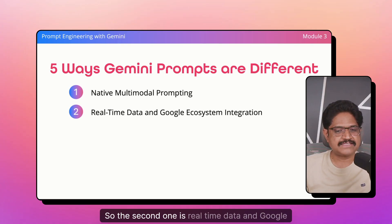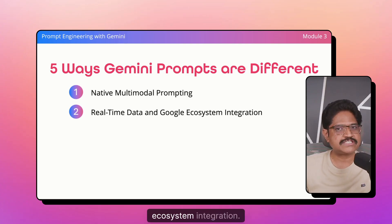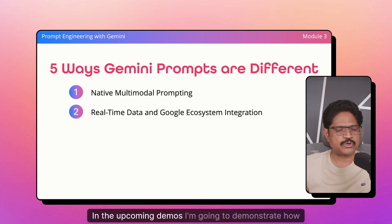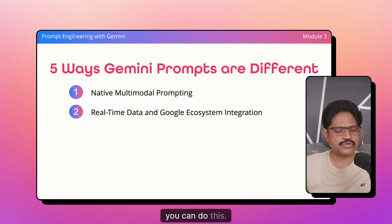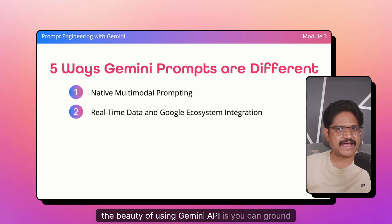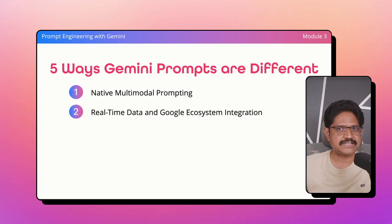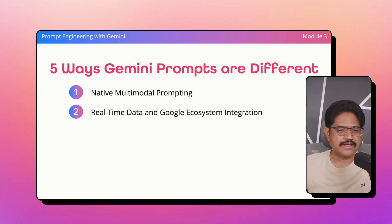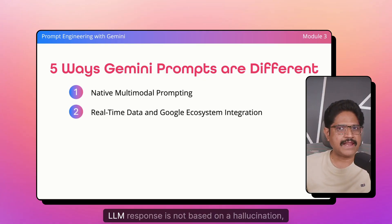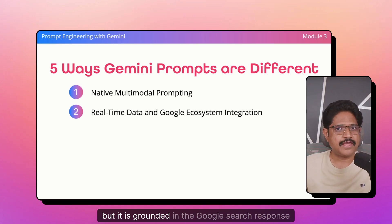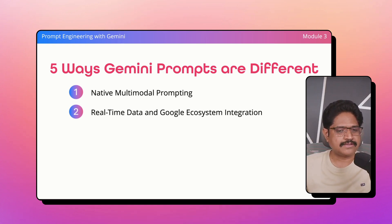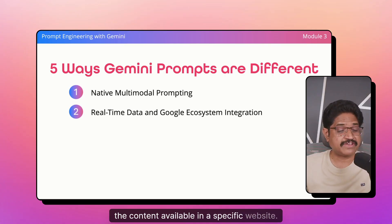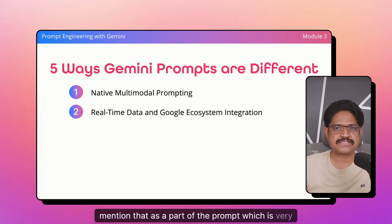The second difference is real-time data and Google ecosystem integration. The beauty of using the Gemini API is you can ground the results based on Google Search or even a specific URL. This ensures that your LLM response is not based on a hallucination, but is grounded in the Google Search response or the content available in a specific website — you can mention that as part of the prompt, which is very advantageous.